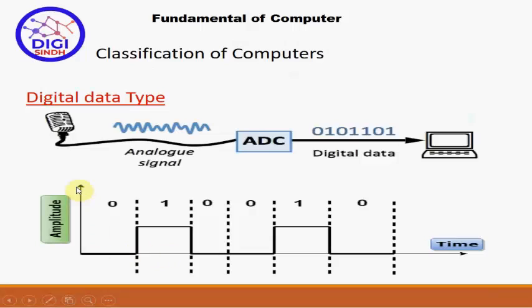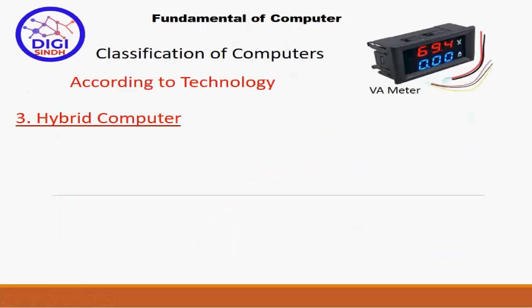Digital data zero اور one کی form میں ہوتا ہے۔ اس wave میں amplitude ہوتا ہے - zero level اور one level۔ جب wave نیچے ہو تو zero، اور جب height پر ہو تو one۔ اس طرح zero اور one کی یہ language binary language کہلاتی ہے، یا دوسرے الفاظ میں digital type of data کہہ سکتے ہیں۔